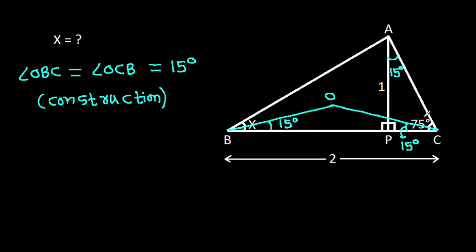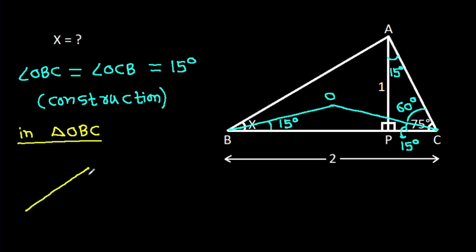And this angle will be 75 degrees minus 15 degrees, that will be 60 degrees. And the interior angle OBC is 15 degrees.